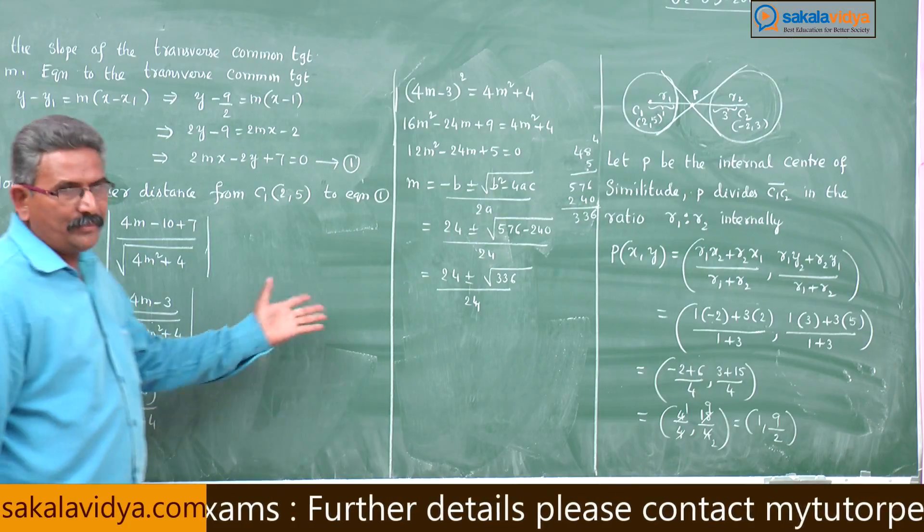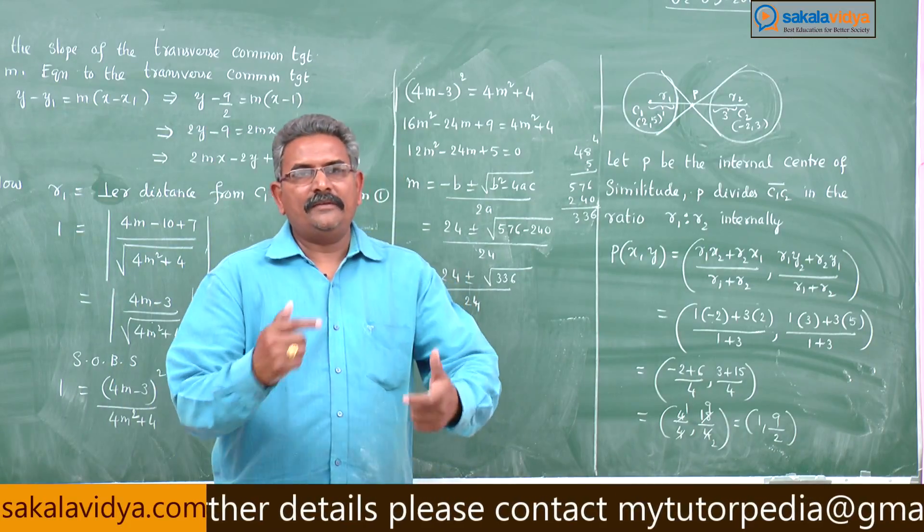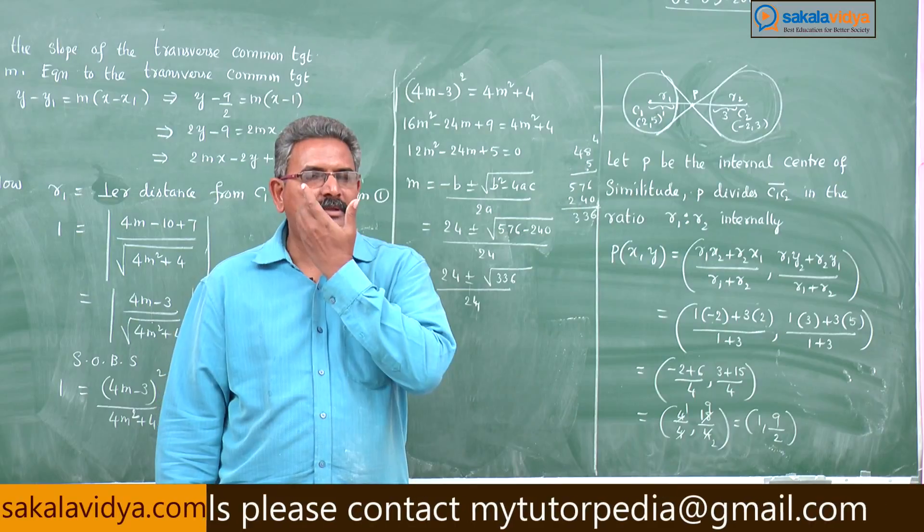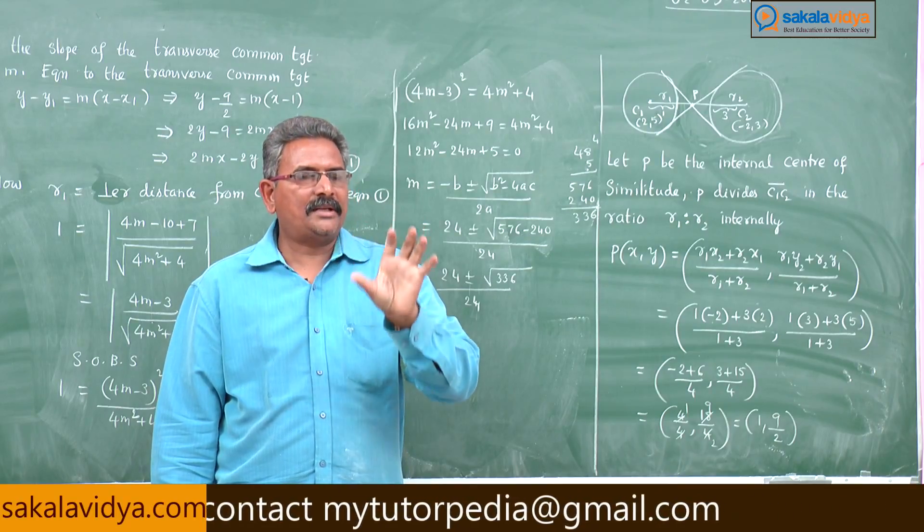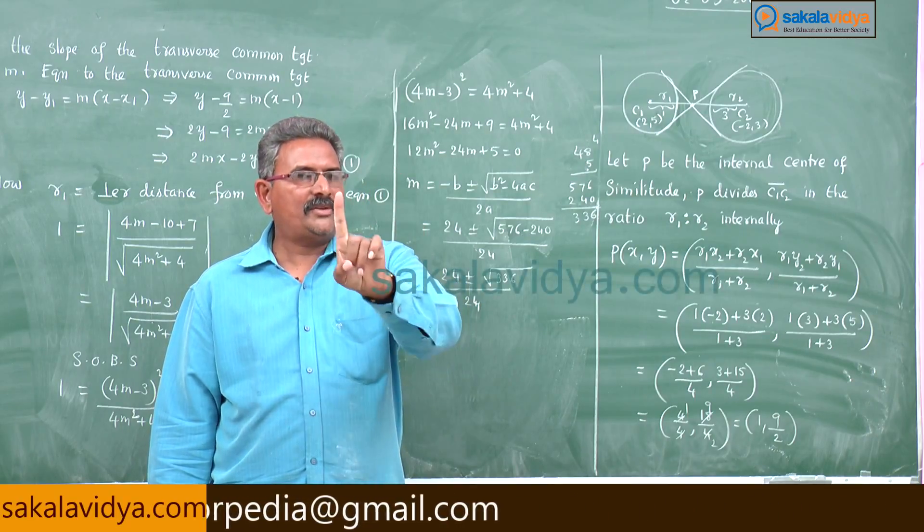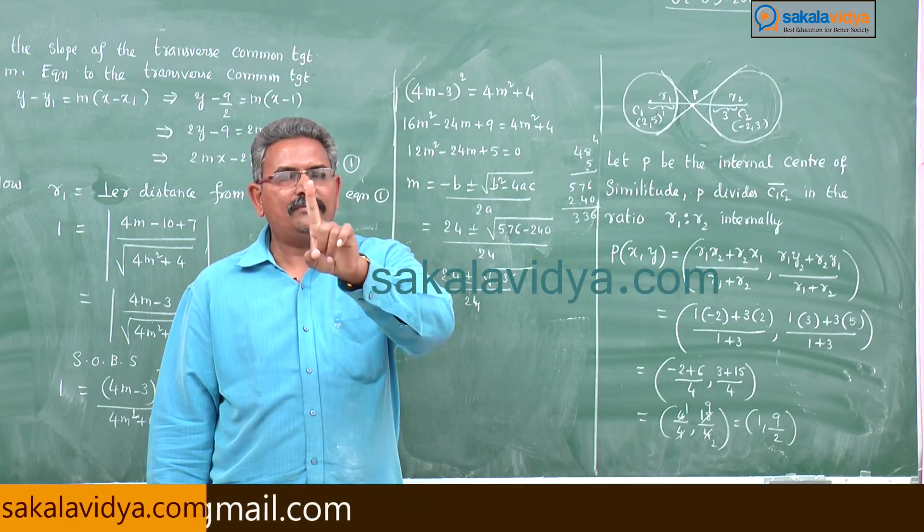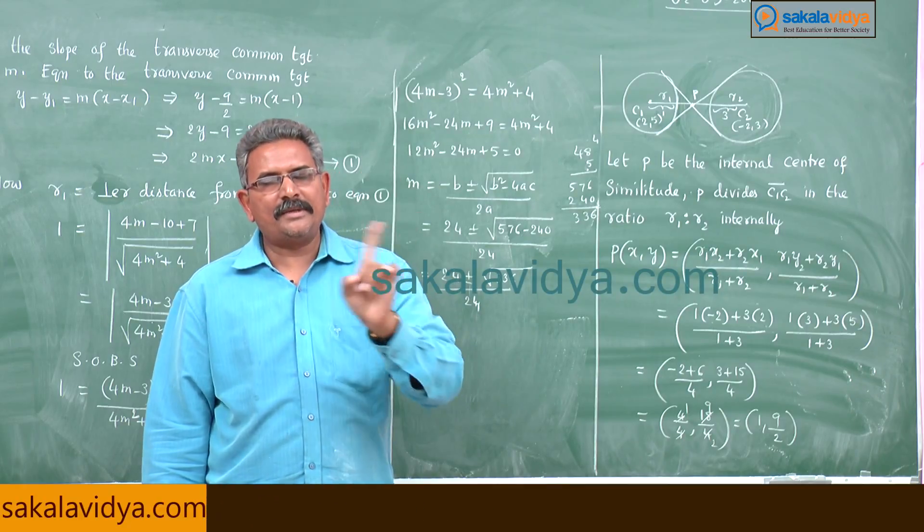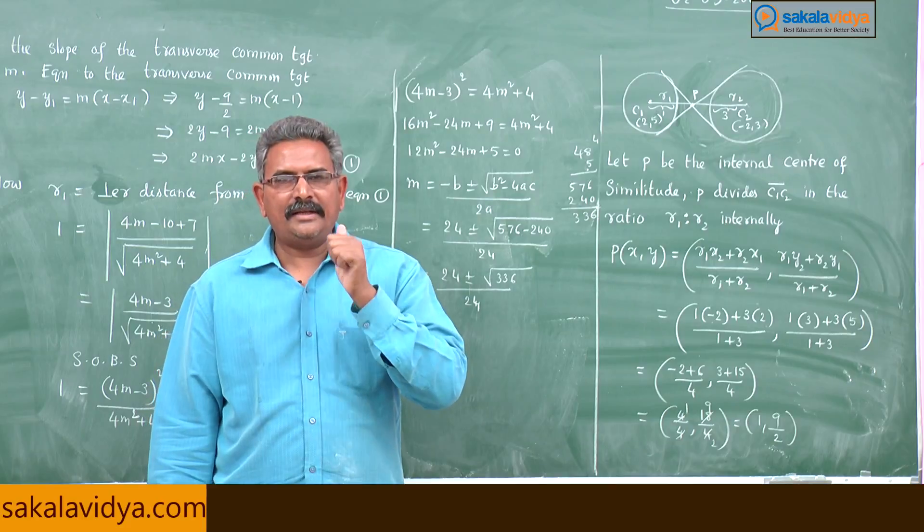Now the circles have been completed, then we will switch over to the next chapter, system of circles. In system of circles, it carries 6 marks in the examination. One very short answer type will appear and one short answer type question: 2 marks plus 4 marks, total weightage is 6. Total for circles plus system of circles carries 28 marks in the examination out of 75.